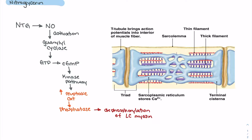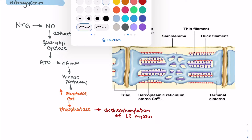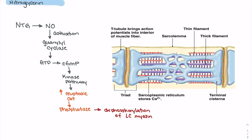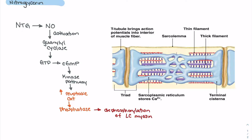Dephosphorylation of the light chain myosin leads to deactivation of the actin-myosin bridges, which results in vasodilation and relaxation of our muscles. To recap: nitrous oxide concentrations activate guanylyl cyclase, which triggers conversion of GTP into cGMP. cGMP activates a kinase pathway leading to calcium reuptake, which opens calcium-gated potassium channels and activates a phosphatase, causing dephosphorylation of light chain myosin and inhibiting vascular contraction.